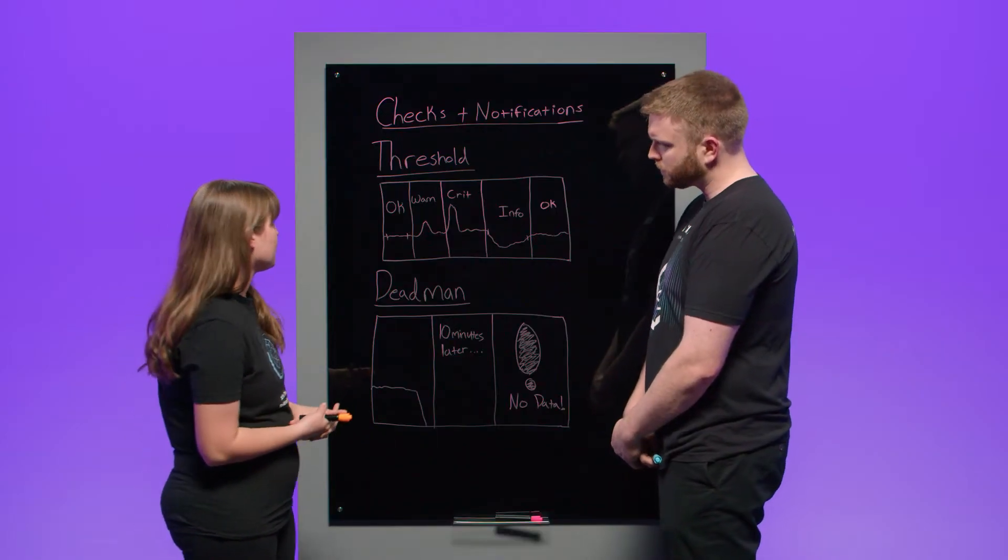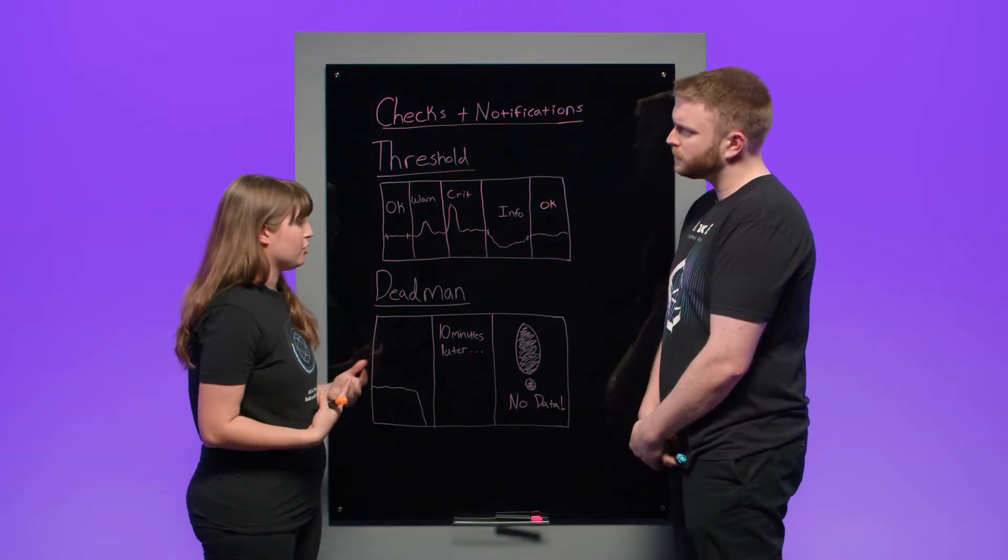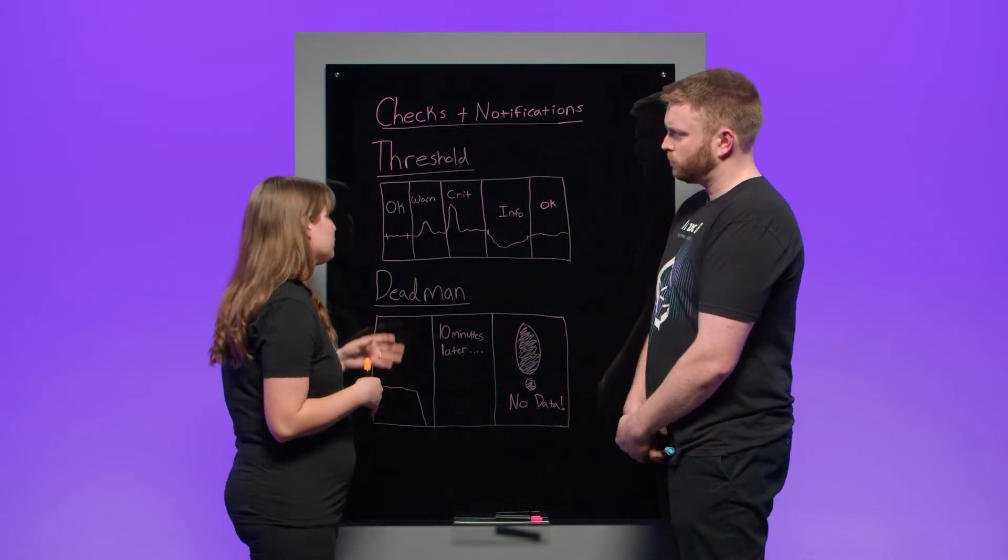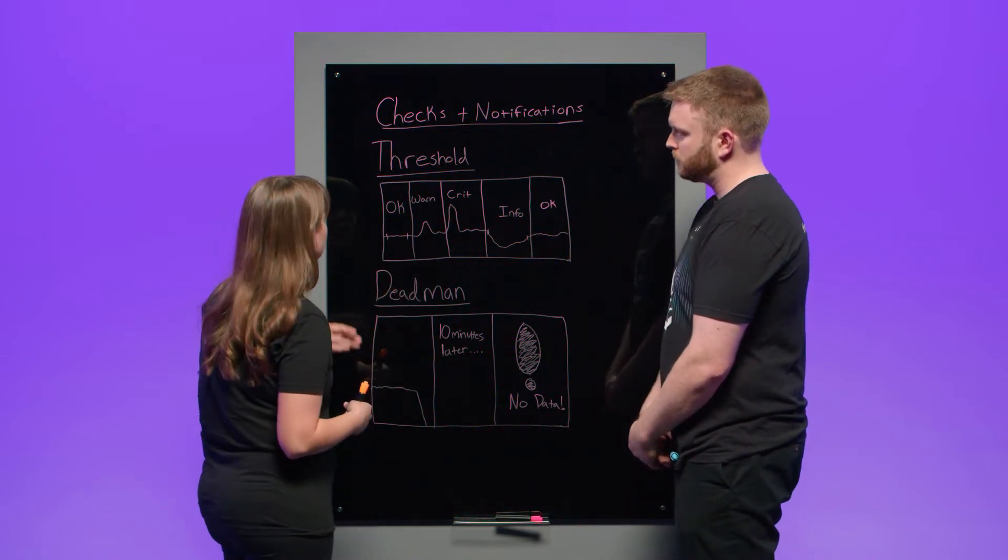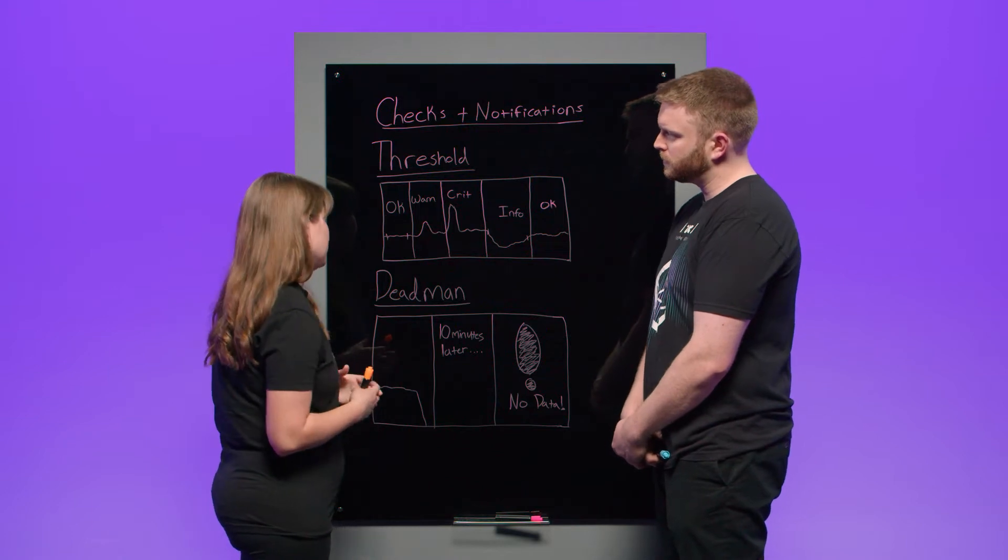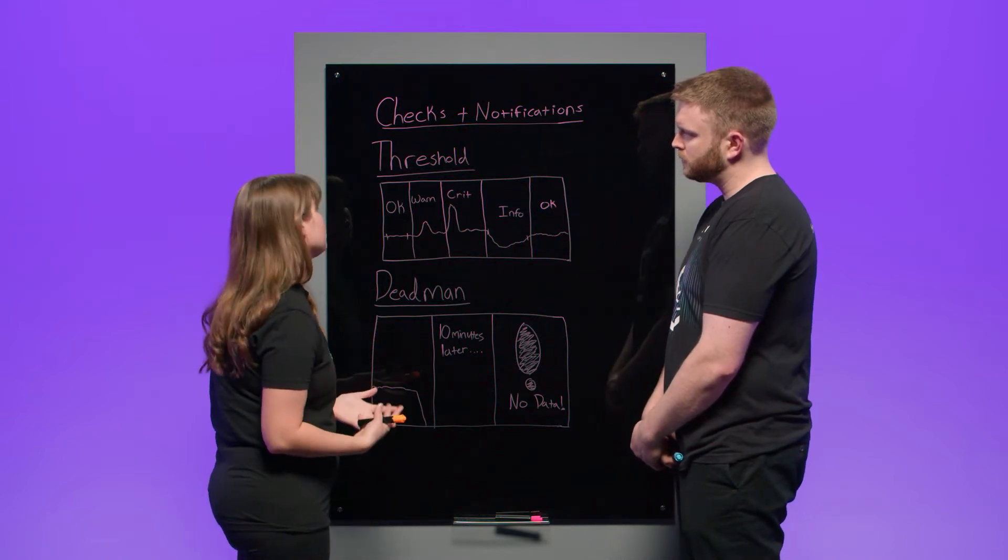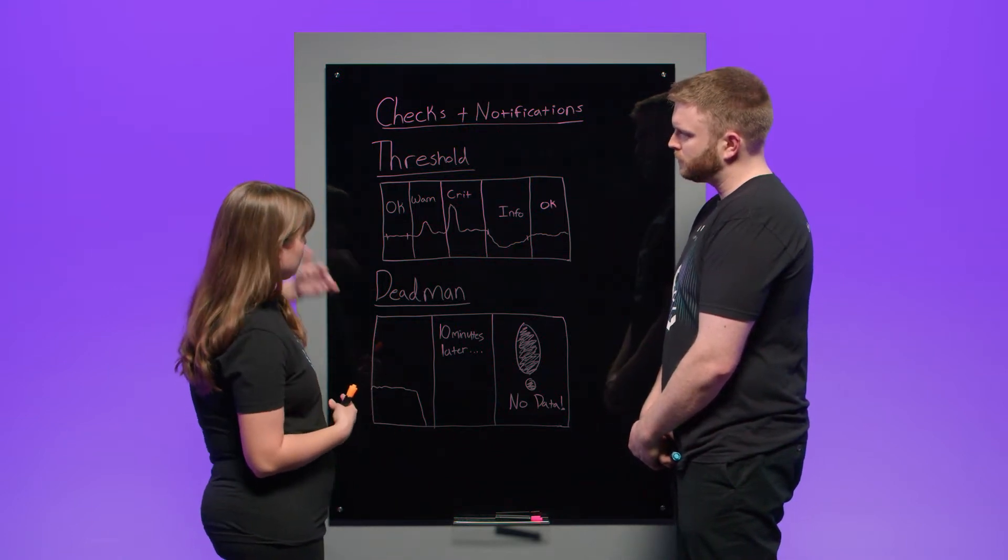Right on. So what's the threshold? So a threshold check would be the one that you would use continuously as your data streams in. So with this, we have four statuses you can assign to your check. You can choose the OK, which means that the data is within the threshold you would expect, which means also just to clarify with a threshold check, it's either below, above or in between a data set.